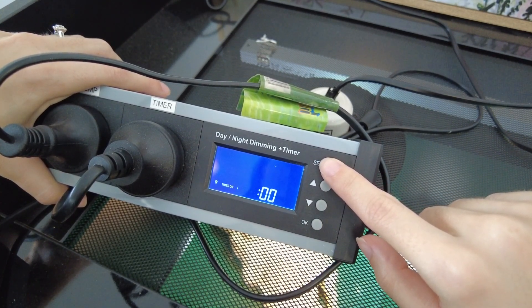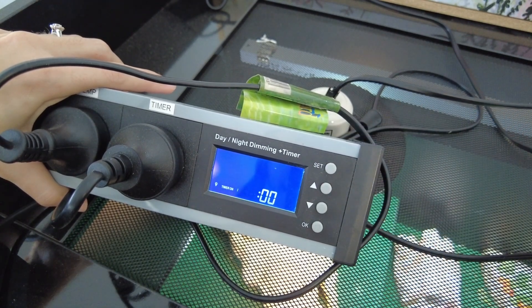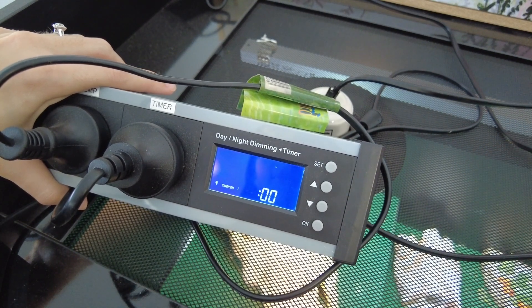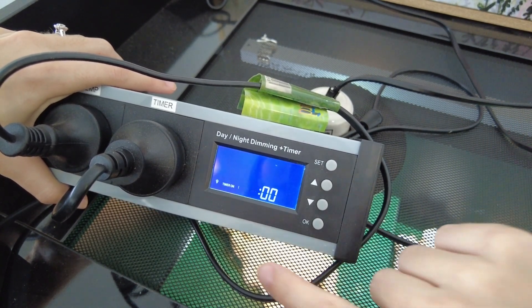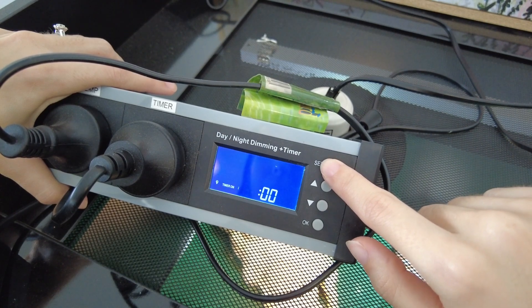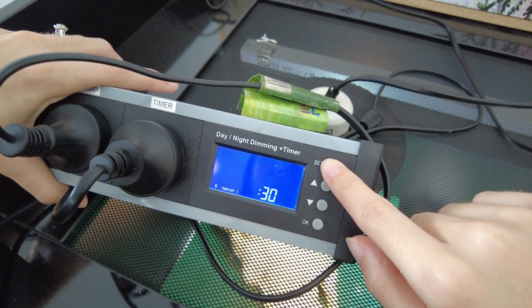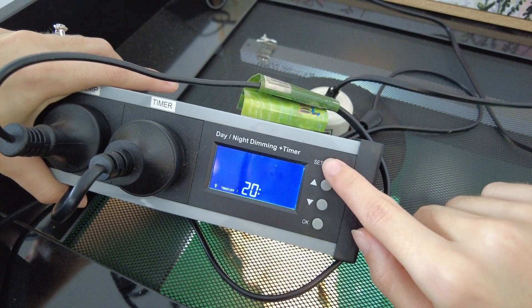Now the next one we've got is our actual timer for our UVB, so when our UVB will turn on and off. And I've got mine to turn on and off at the same time that the heat changes to. So 6 a.m. again for our UVB and then turning off at 8:30. So I'll press set when we're happy with that.